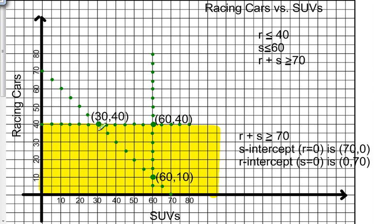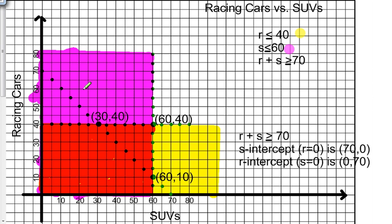The next one I have is S is less than or equal to 60. Here's 60. So I'm going to shade my region for 60. Here's my shaded region for S is less than or equal to 60.